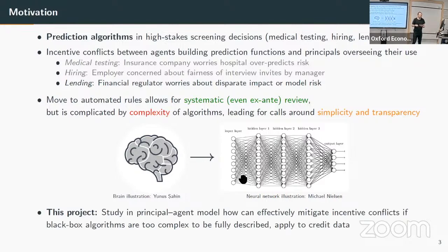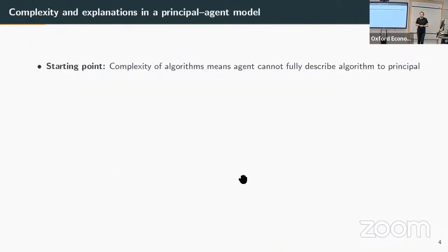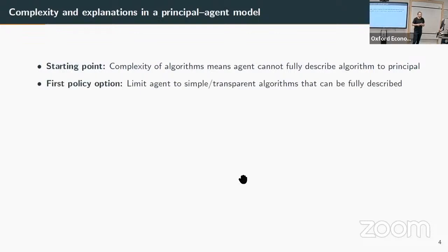In this project we ask: in a principal-agent model that explicitly models these incentive conflicts, can we say something about the tradeoffs between complexity and ability to provide oversight? How should we think about mitigating incentive conflicts when algorithms are too complex for the regulator to fully understand? Complexity means the agent cannot describe the full algorithm to the regulator—some information will be lost. That could be because the technology is proprietary, or simply because it's so complex a regulator couldn't fully understand it even with full access.